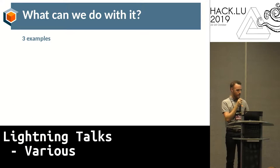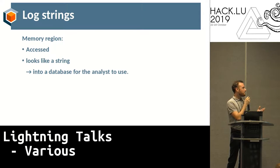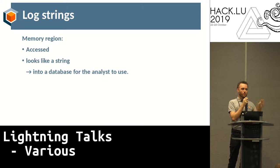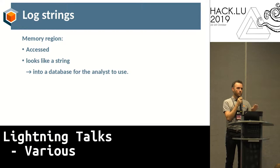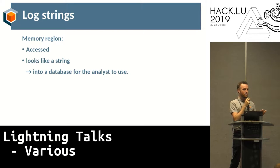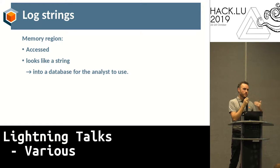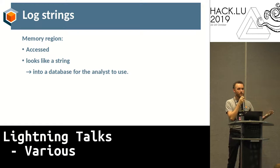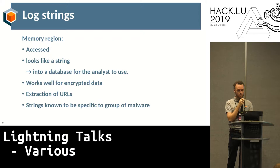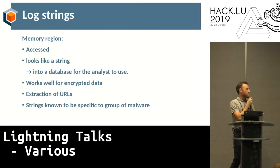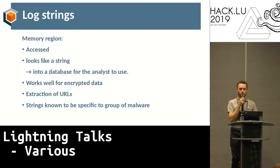To give examples of what we think we can do with it: the first thing you could do is log strings — and I'm talking about dynamic strings. If you look at all the memory accesses in your trace and when something looks like a string you log that in a database, then if the malware decrypts some string in memory, uses it, and erases it afterwards, it doesn't matter, because as soon as it hits memory it's there in your database for the analyst to use. That makes it easy to extract encrypted URLs or similar things that your malware has used in the trace. The challenge, of course, is making sure your malware actually uses it.